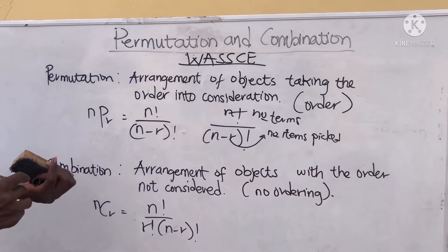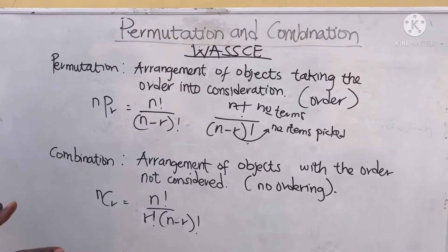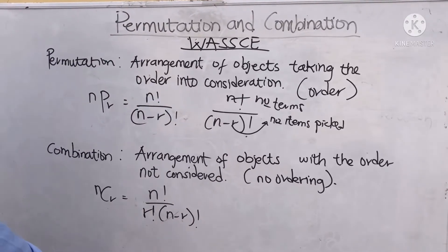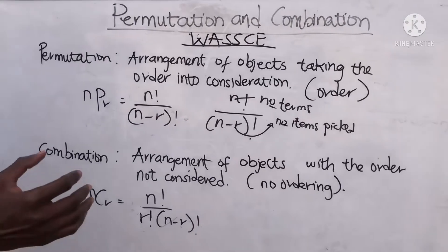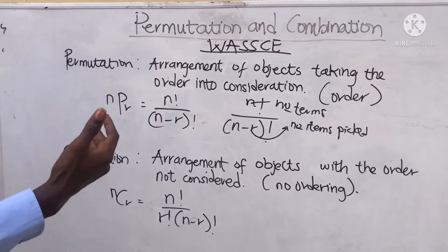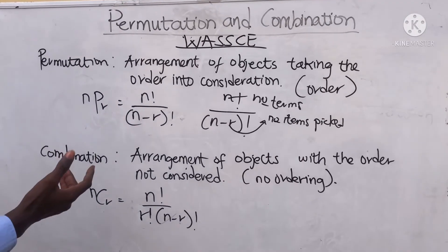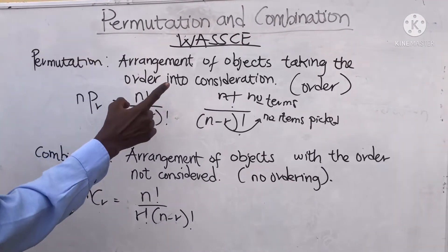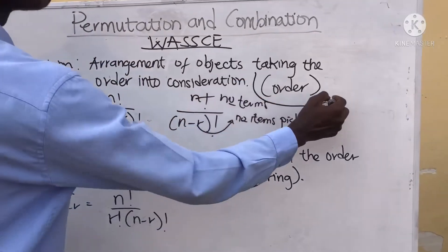In permutation and combination, it's all about a selection of items — putting them back, selecting them, arranging them. It involves both arrangements and selection. Now, the key point in permutation is order.